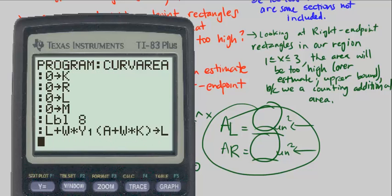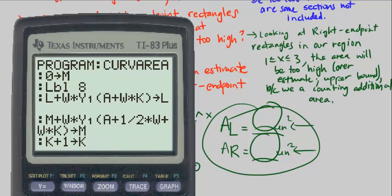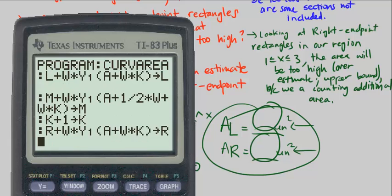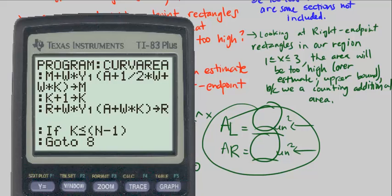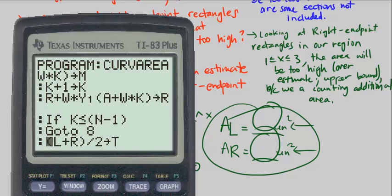B minus A over N is stored into W. K, R, L, and M are initialized. A label of 8. Here we're storing in the left endpoint area, the midpoint area. K is incremented. The right endpoint area. Checking for K is less than or equal to N minus 1. And then if it is, go ahead and loop.